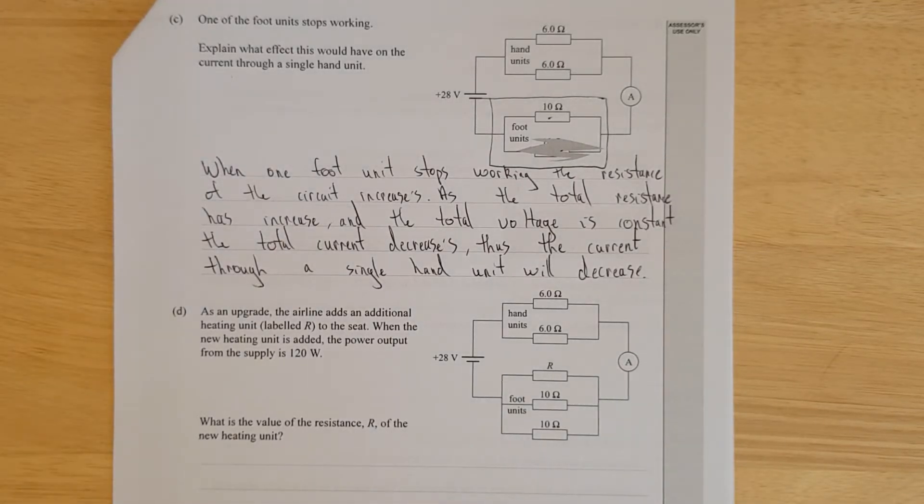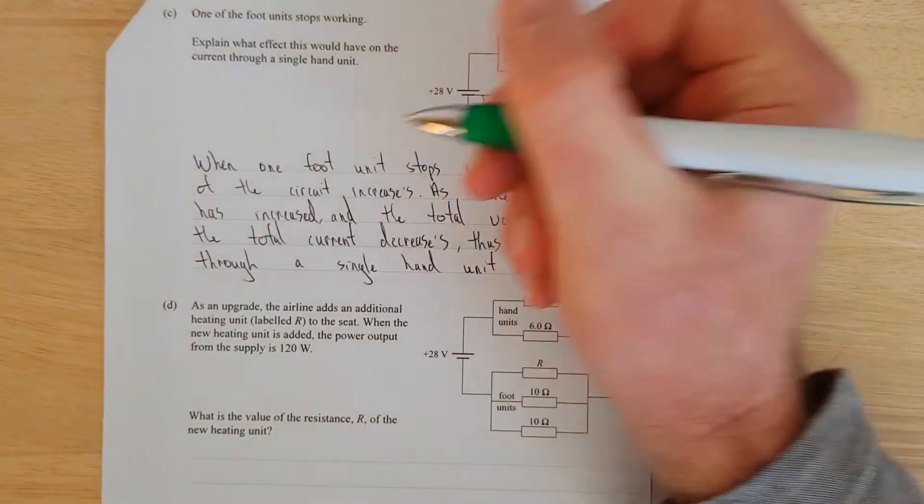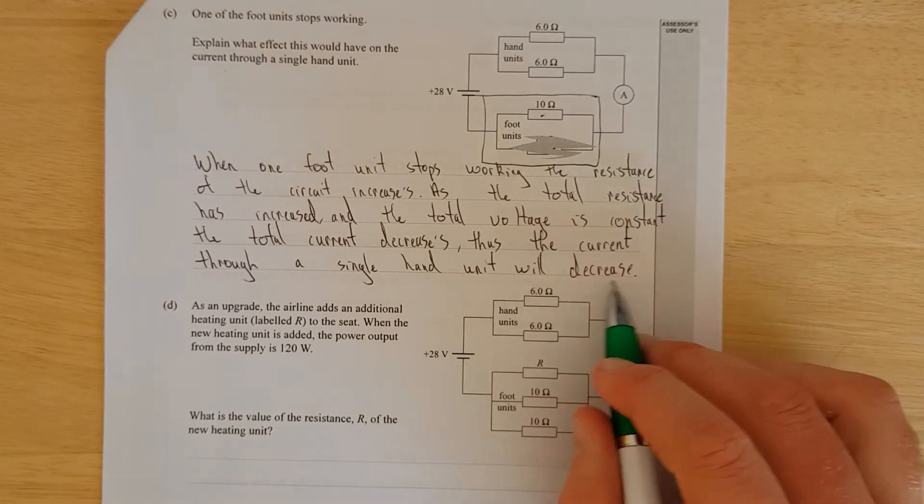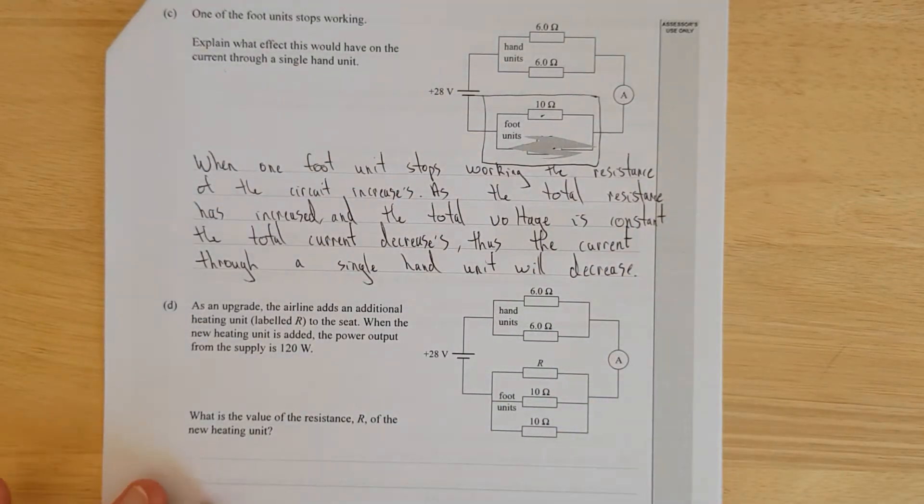When one foot unit stops working, the resistance of the circuit increases. As the total resistance has increased and the total voltage is constant, and it pays to say it's constant, the total current decreases. Thus, the current through the single hand unit will decrease. You need to answer the question at the very end, which a lot of students often don't do.